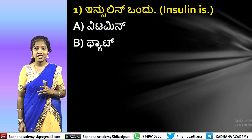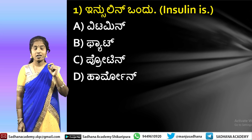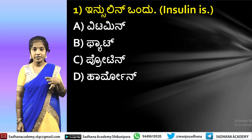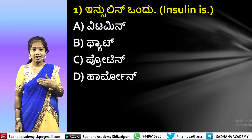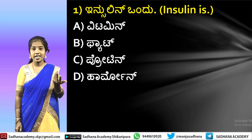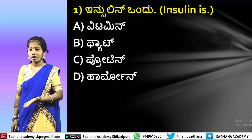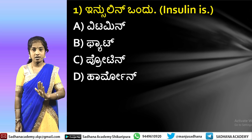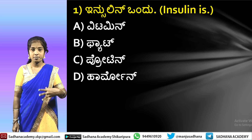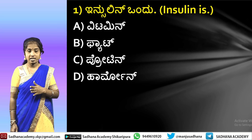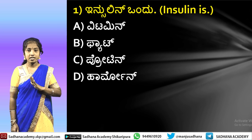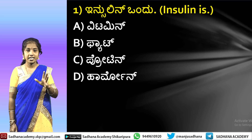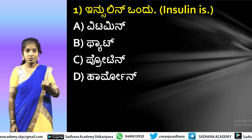The next question: insulin — what is insulin? The options are vitamin, fat, protein, or hormone. You know about vitamins: A, D, E, K are fat-soluble vitamins, and B and C vitamins are water-soluble. Insulin is not a vitamin. It could be fat, protein, or hormone.